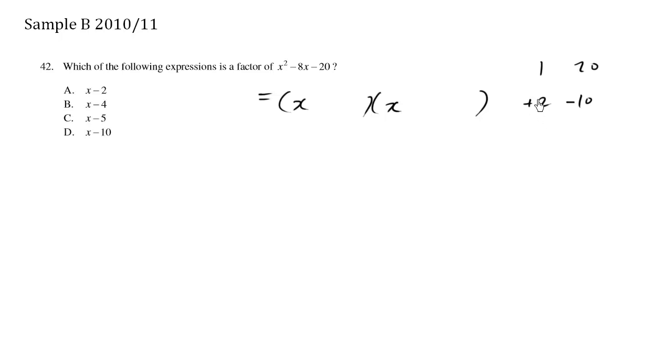And we see that 2 times negative 10 is negative 20. And when we add these, we get negative 8. So this is correct. This is the combination we want to use. So plus 2, minus 10.